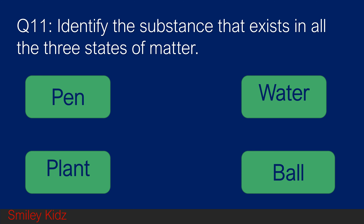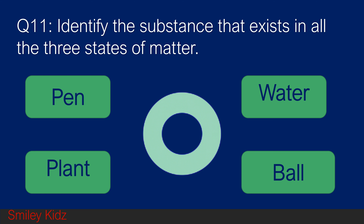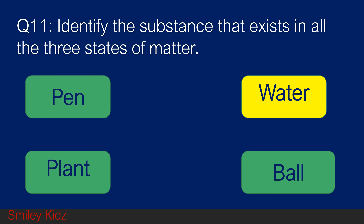Question number 11. Identify the substance that exists in all three states of matter. Option A pen, option B water, option C plant, and option D ball. Your time starts now. And your time is up. The right answer is water. Water is a substance that exists in all three states of matter.